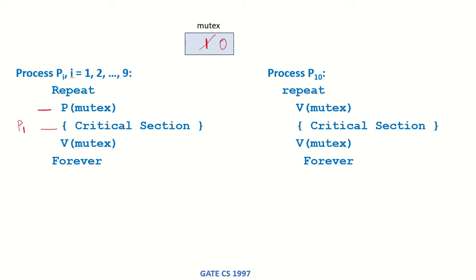With mutex at 0, any of the other processes p2 through p9 that want to enter the critical section will see P(mutex) with mutex equal to 0, so they will not be able to enter the critical section at this point. So p1 is the only process in the critical section, and now p1 is preempted by p10, which wants to enter the critical section.